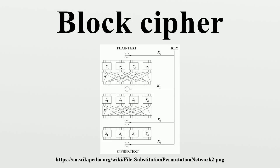Let the round function, a half round function, and the sub-keys for the rounds be defined respectively. Then the basic operation is as follows: split the plaintext block into two equal pieces for each round, compute accordingly, and decryption of a ciphertext is accomplished by reversing the process to recover the plaintext.